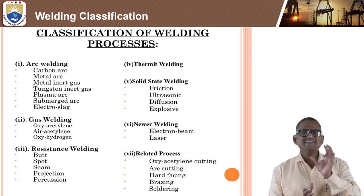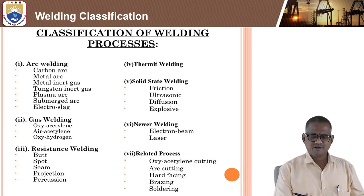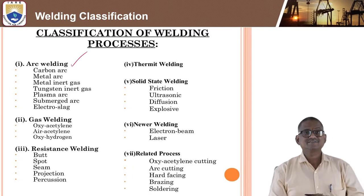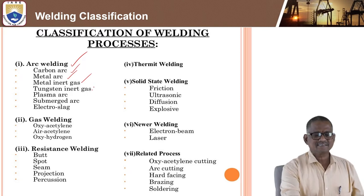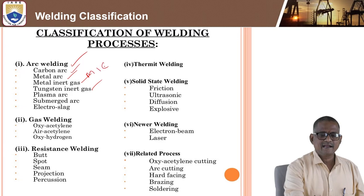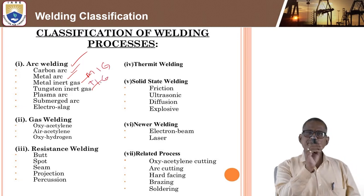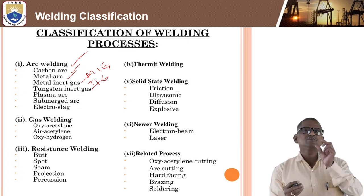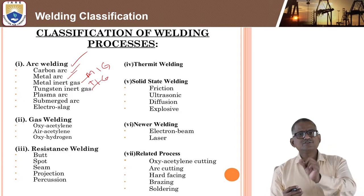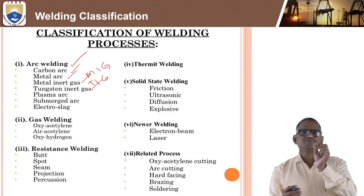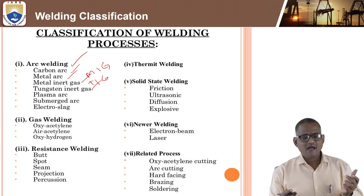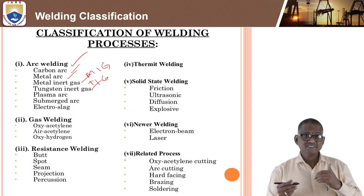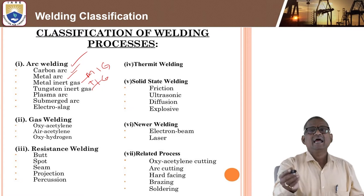The classification of welding processes includes arc welding, which is subdivided into carbon arc, metal arc, metal inert gas (MIG), and tungsten inert gas (TIG) welding. The basic difference between MIG and TIG is that TIG uses a non-consumable electrode, whereas MIG uses a consumable electrode — a continuous flow of wire in place of filler rods. Other arc types include plasma arc welding, submerged arc welding, and electroslag welding.